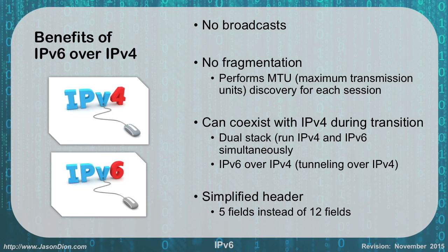Another nice thing about IPv6 is it can coexist with IPv4 during the transition. Right now, most people are running IPv4 and IPv6 simultaneously and probably don't even know it. You can also tunnel IPv6 over IPv4, so even if you have old IPv4 devices like switches and routers, they can still support IPv6 tunneling over them. And it has a simplified header — with IPv4 we had 12 fields, now we're down to only five fields, simplifying overhead and making it go faster.